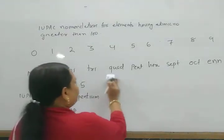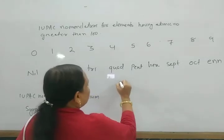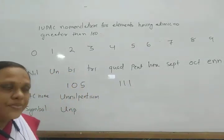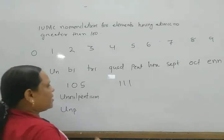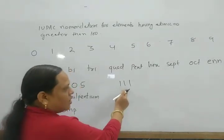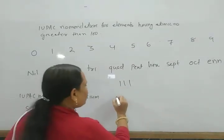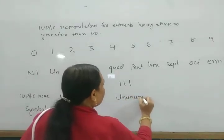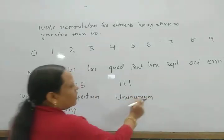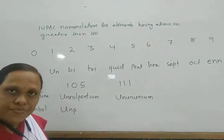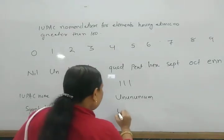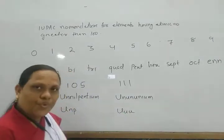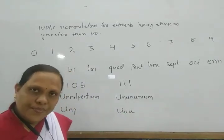For example, if an element has atomic number 111, each digit is 1, giving word root 'un' three times. The name is Unununnium. The symbol is Uuu.